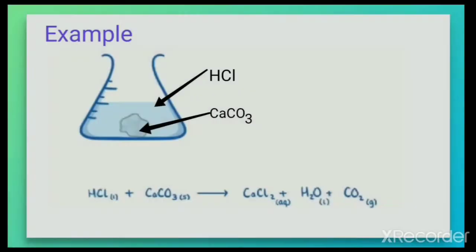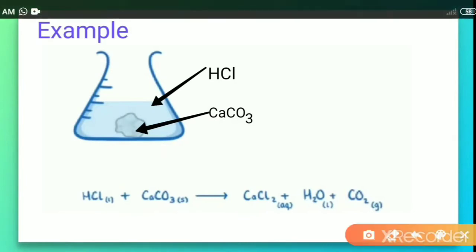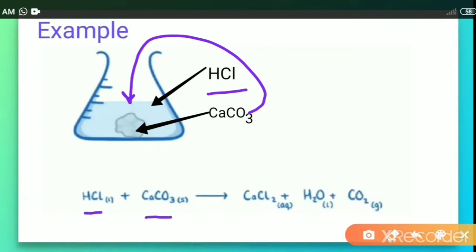Let us take hydrochloric acid and a conical flask in which we have added calcium carbonate. We know that when HCl reacts with calcium carbonate, it gives rise to calcium chloride, water, and carbon dioxide. Carbon dioxide is a gas, which means there will be formation of effervescence, because the gas moves out in the form of bubbles.